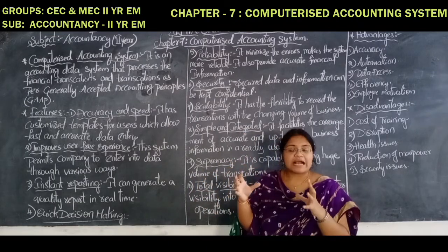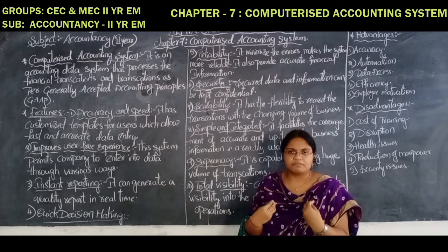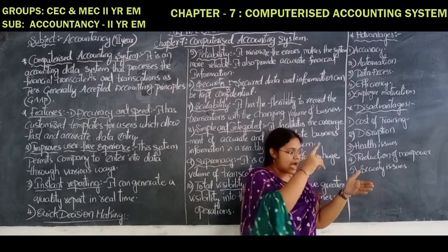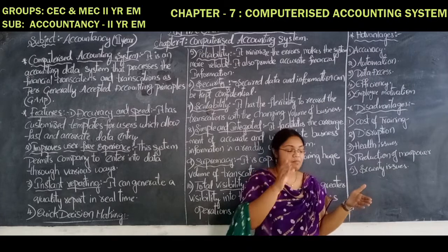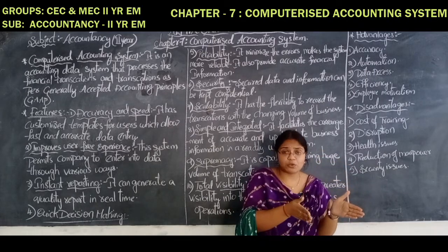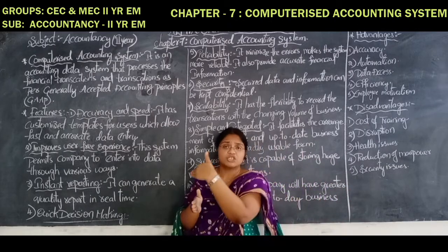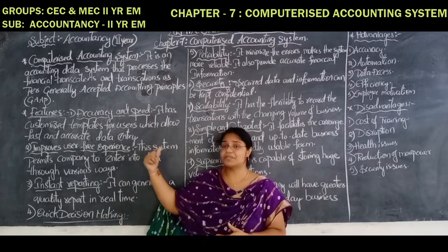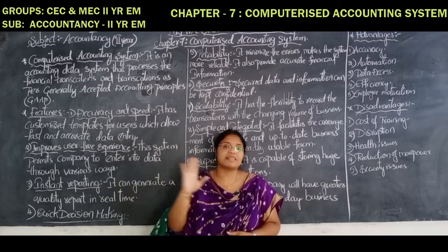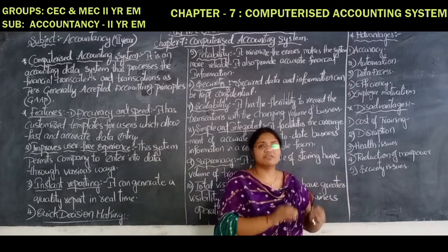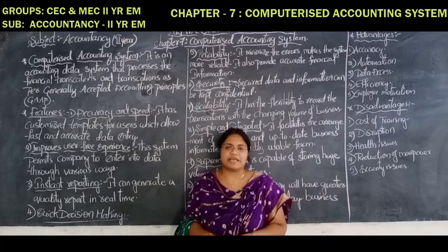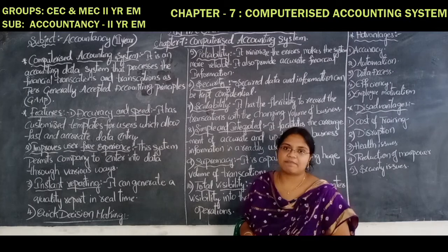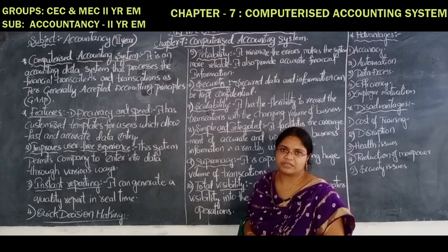If we do accounting manually — with manpower — it will take a long period of time. For example, if I give you a problem and ask you to prepare the final accounts, you have to first prepare journal entries, then post to the ledger, then subsidiary books, then trial balance, then the trading account, profit and loss account, and then the balance sheet. Whereas in the computerized accounting system, no need to do all those things. If you post those things in the ledger, that is more than enough. The remaining work is done by the system only, according to the packages. One of the famous packages for the computerized accounting system is the Tally package. According to the system, there will be different types of methods of entering the data.